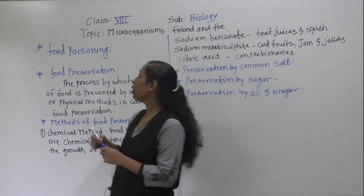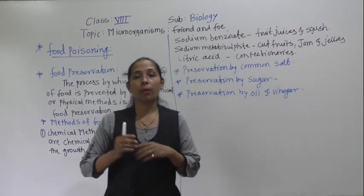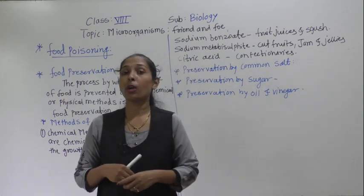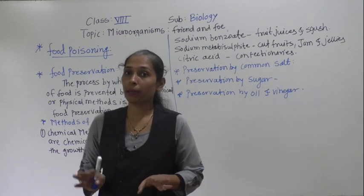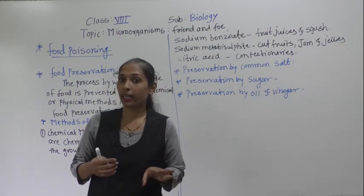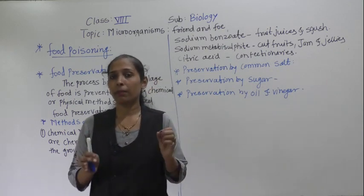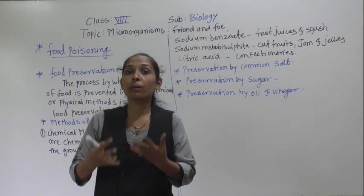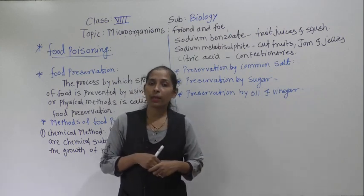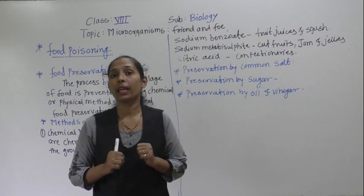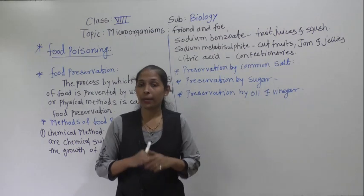What is food poisoning? Food can get contaminated in different ways - if we do not keep the food properly, if we do not cover it properly, if the temperature is high, if it is not placed in a proper place, or if food is kept in a place with more moisture, the food can get contaminated or wasted.